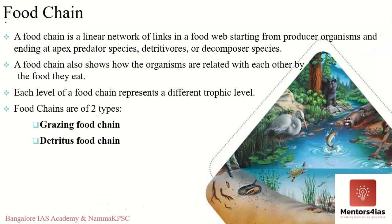A food chain in an ecosystem refers to a linear sequence or progression through which energy or matter in the form of food is transferred from one organism to another. Food chains can generally be classified into two types: the grazing food chain and the detritus food chain.